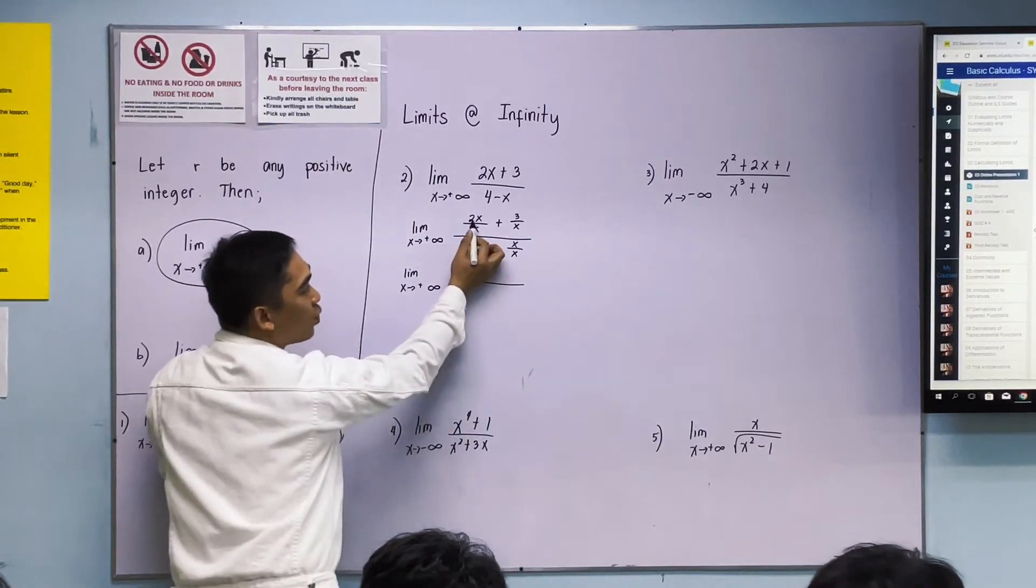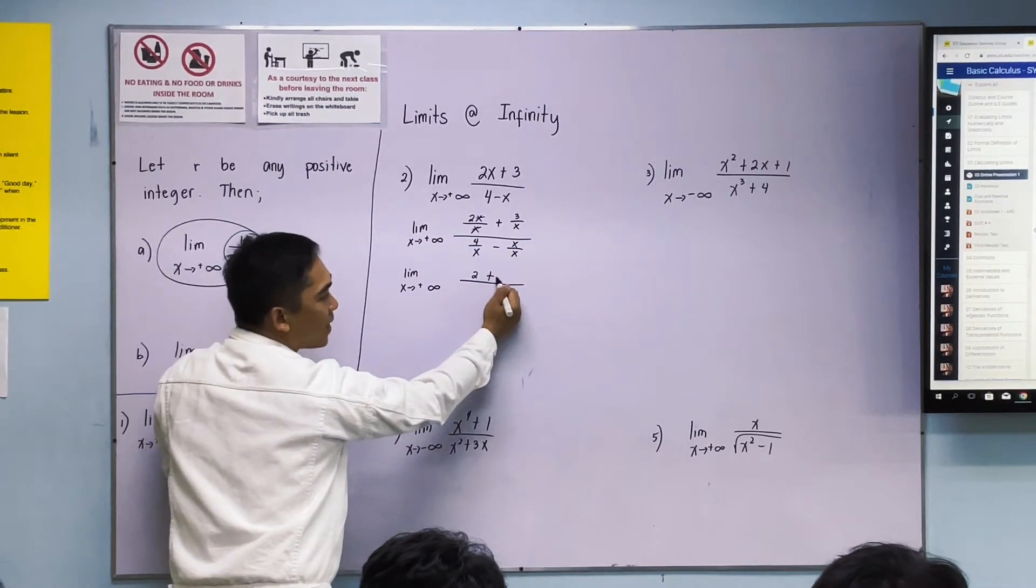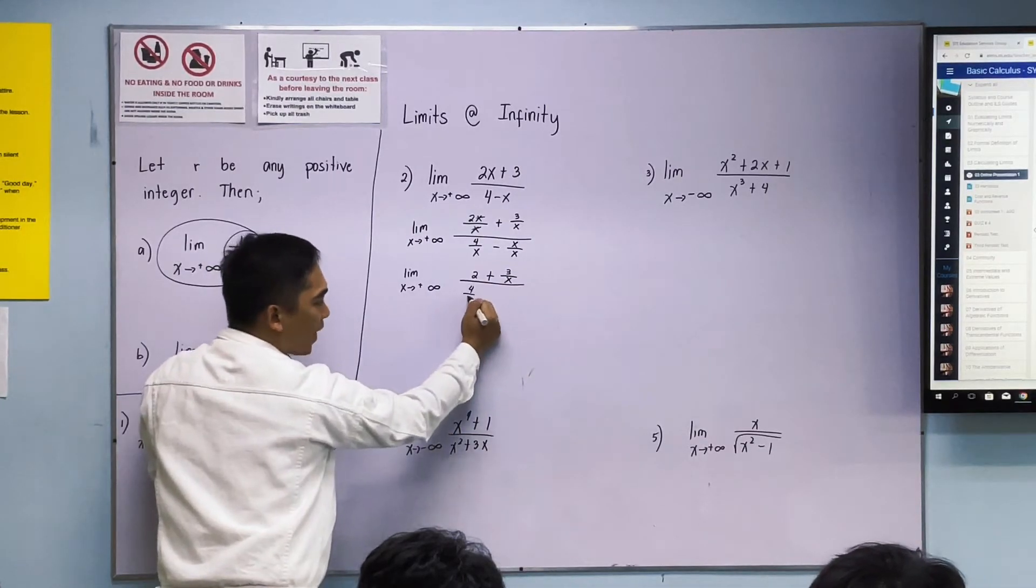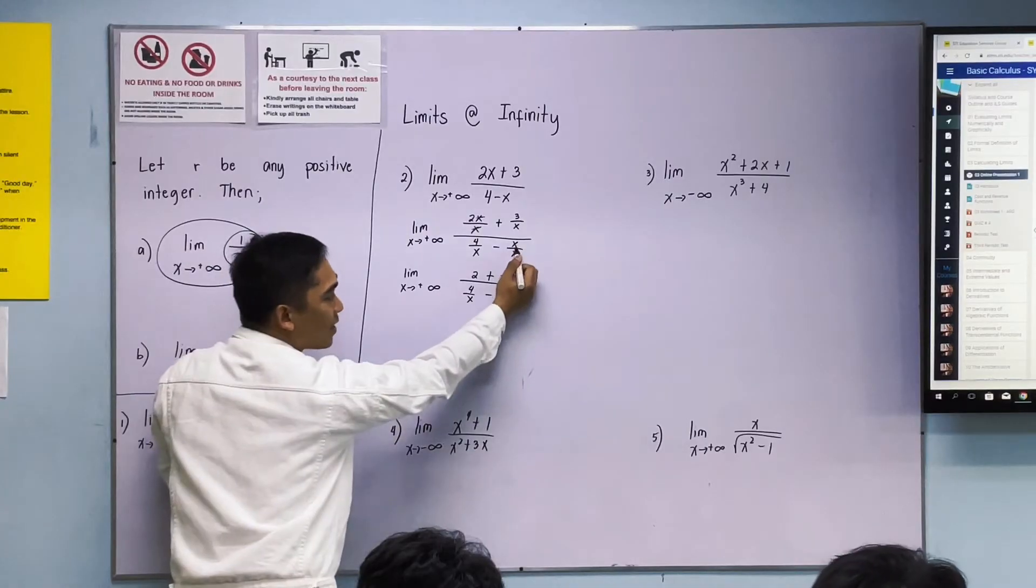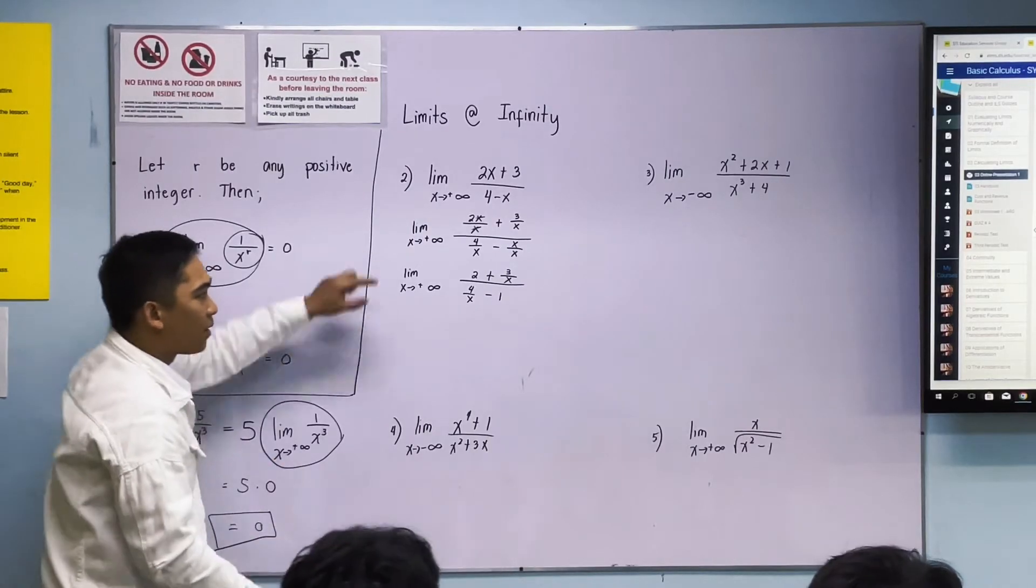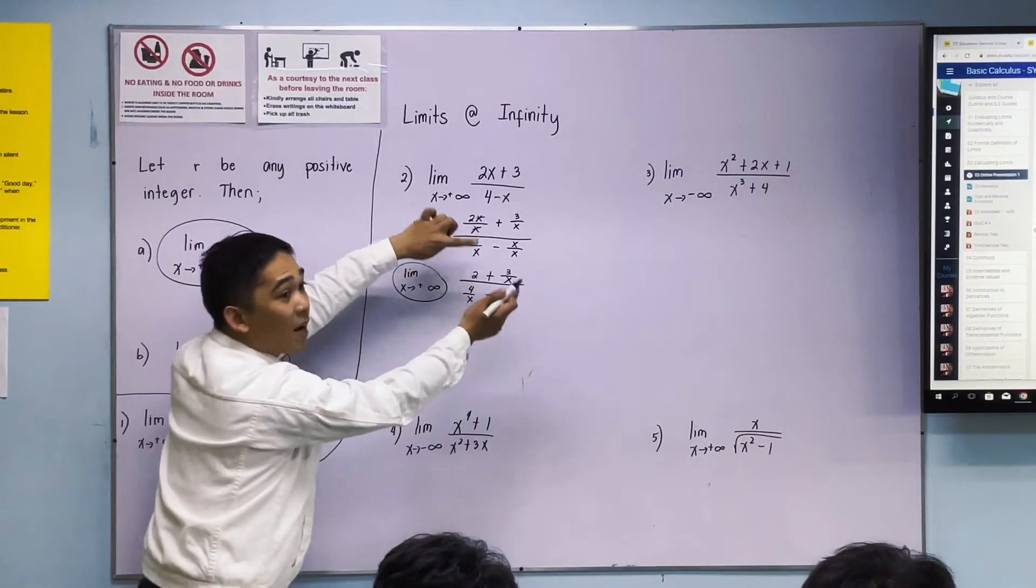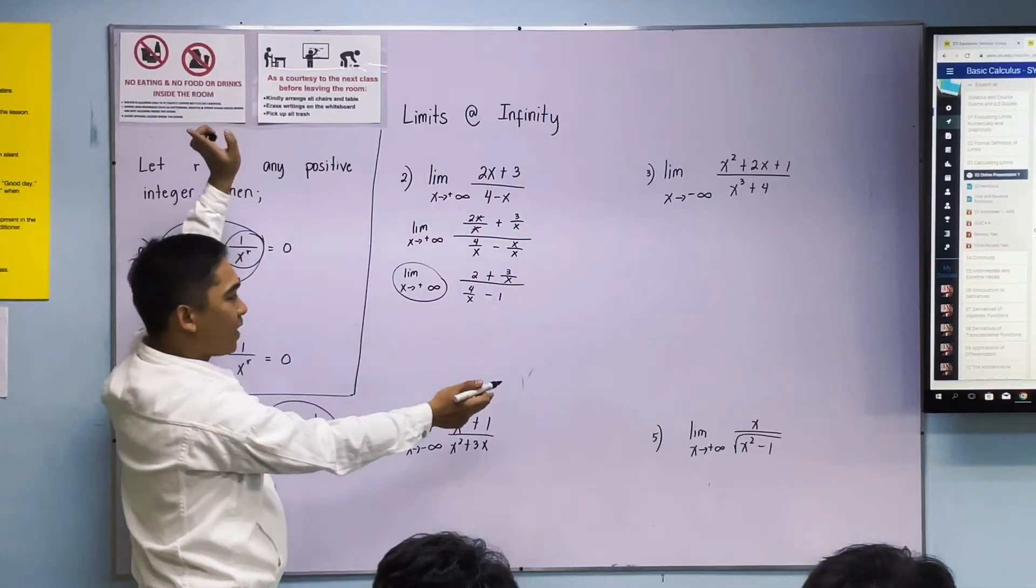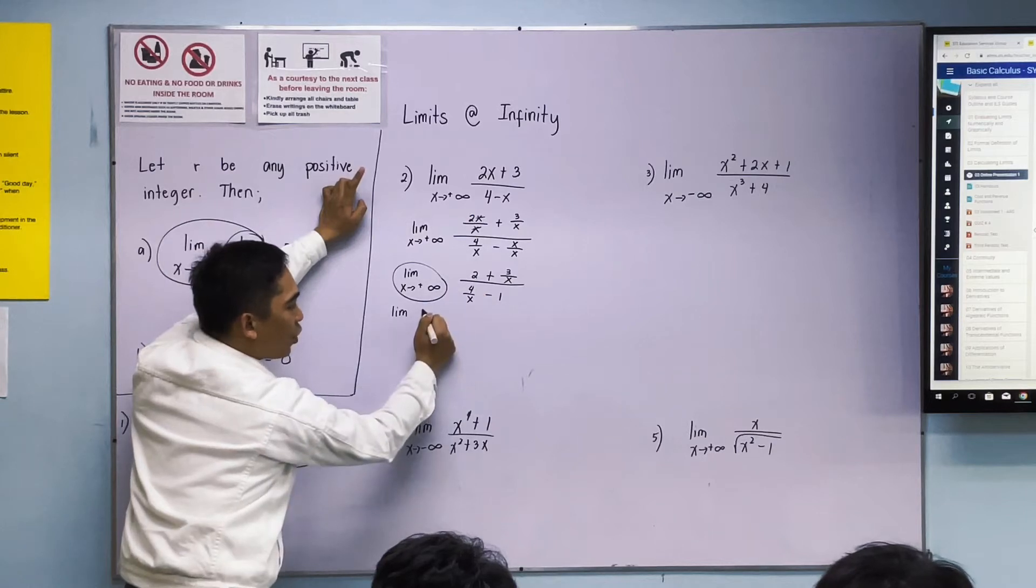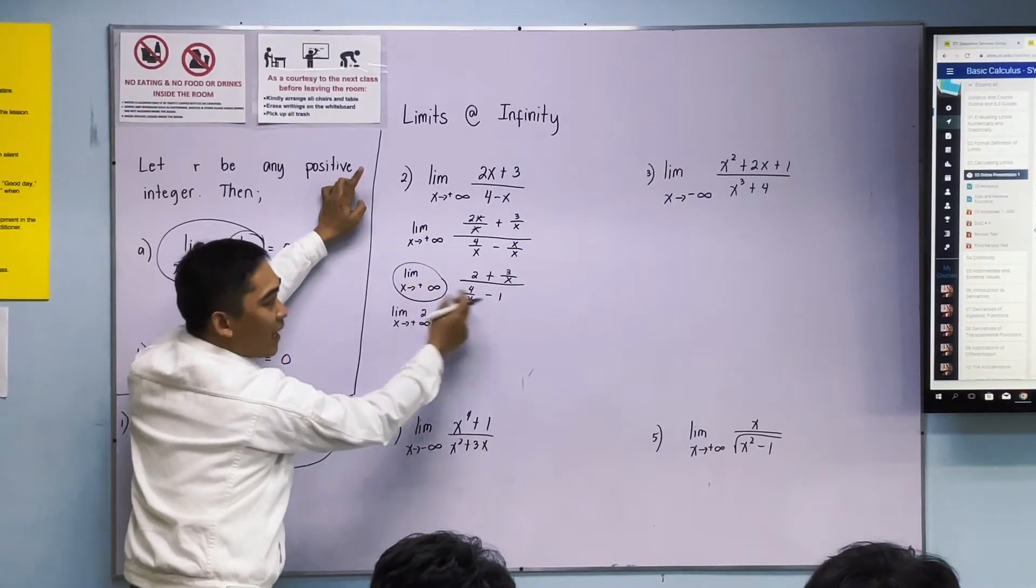When we simplify, let's copy it first. Then simplify: 2x over x, the x will be cancelled out, will become 2 plus 3 over x. This becomes 4 over x minus x divided by x is 1.